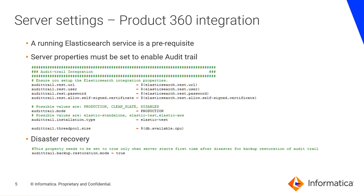Regarding server settings, as mentioned before, a running Elasticsearch service is a prerequisite since all the changes made via our clients will be indexed using Elasticsearch. To enable audit trail in the server properties, you will have several properties to configure. Note that audit trail mode will be production if you want to keep all changes recorded after a server restart. For disaster recovery, you will have a backup restoration mode, which will be applicable in case of a server down situation.